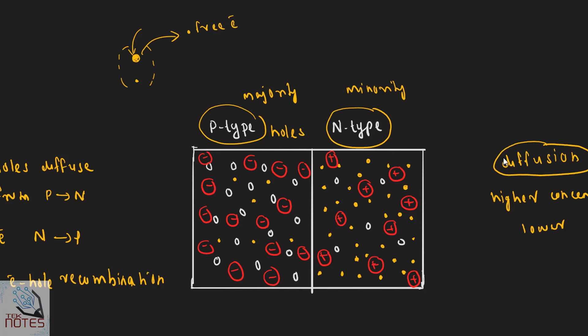There are acceptor ions and donor ions. At the junction, electron-hole recombination occurs. The electrons and holes are recombined at the junction, and the junction region becomes charged.